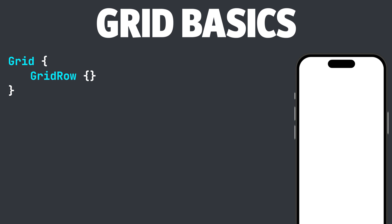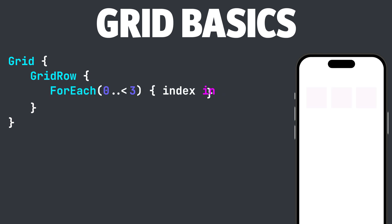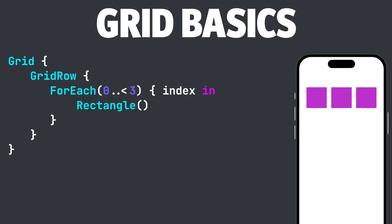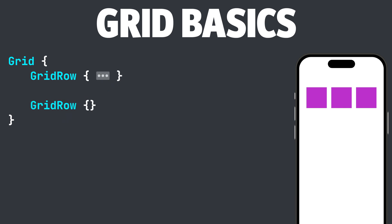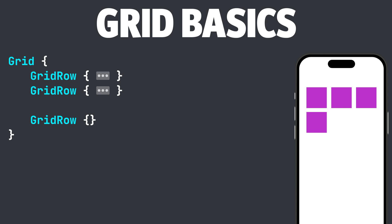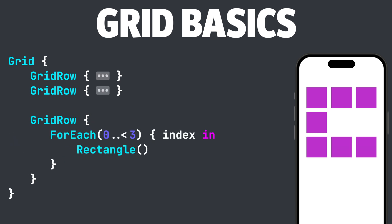Let's add three rectangles inside of the grid row and see what happens. We will first create our ForEach and then add a rectangle inside of the ForEach. Let's add another grid row with only one rectangle, and then one more grid row with three rectangles just like we did before.